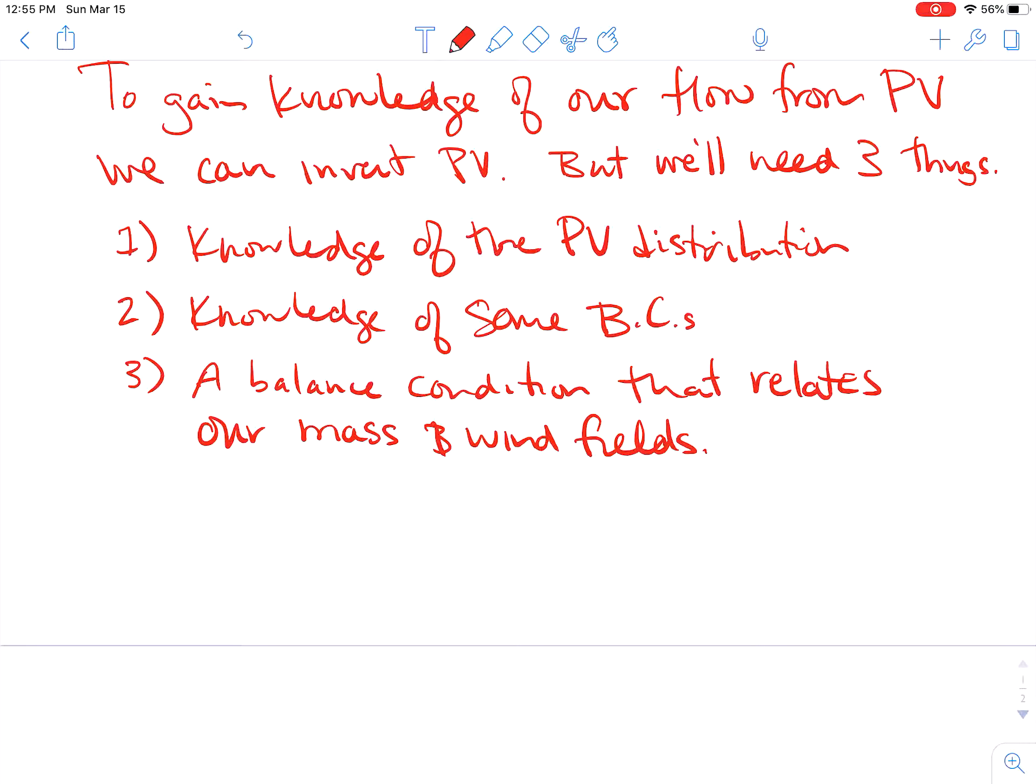So what is a balance condition that relates our mass and wind field? The most basic one is geostrophic balance. Remember that in that balance equation, we're basically seeing a balance between our wind field and the mass field in terms of our geopotential height. Now, if we used geostrophic balance, that would not actually serve much purpose because we know that geostrophic balance does not reign true across our entire atmosphere.